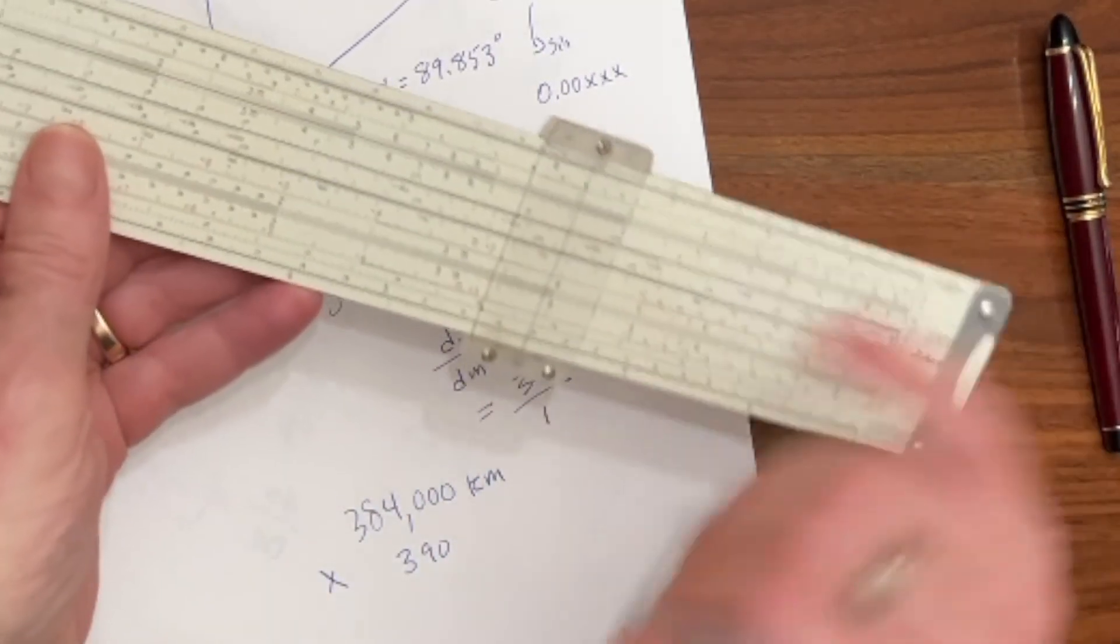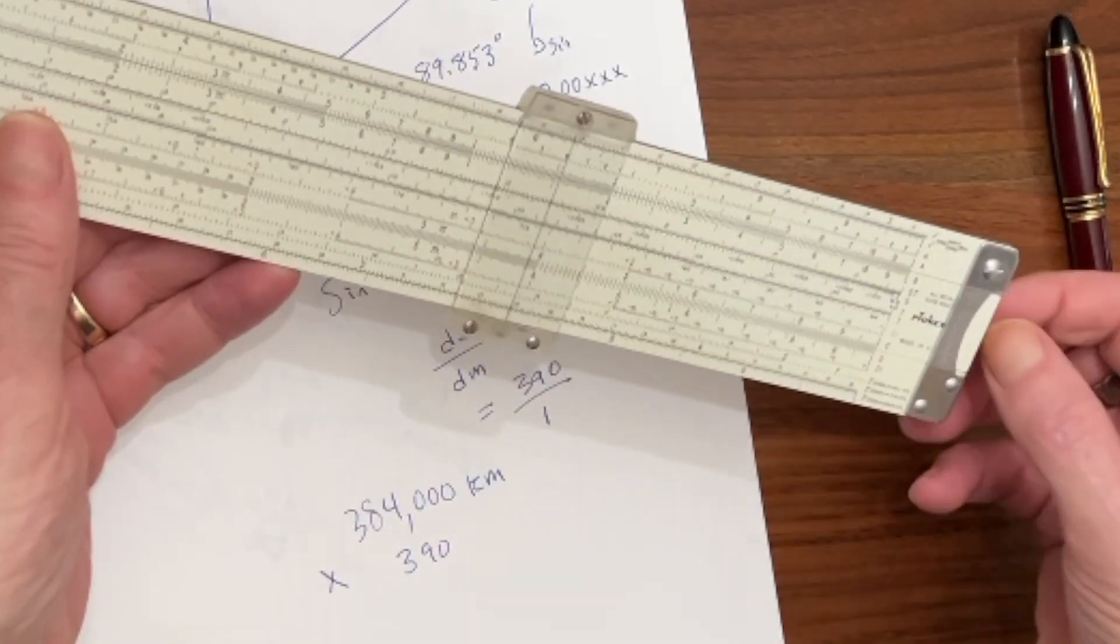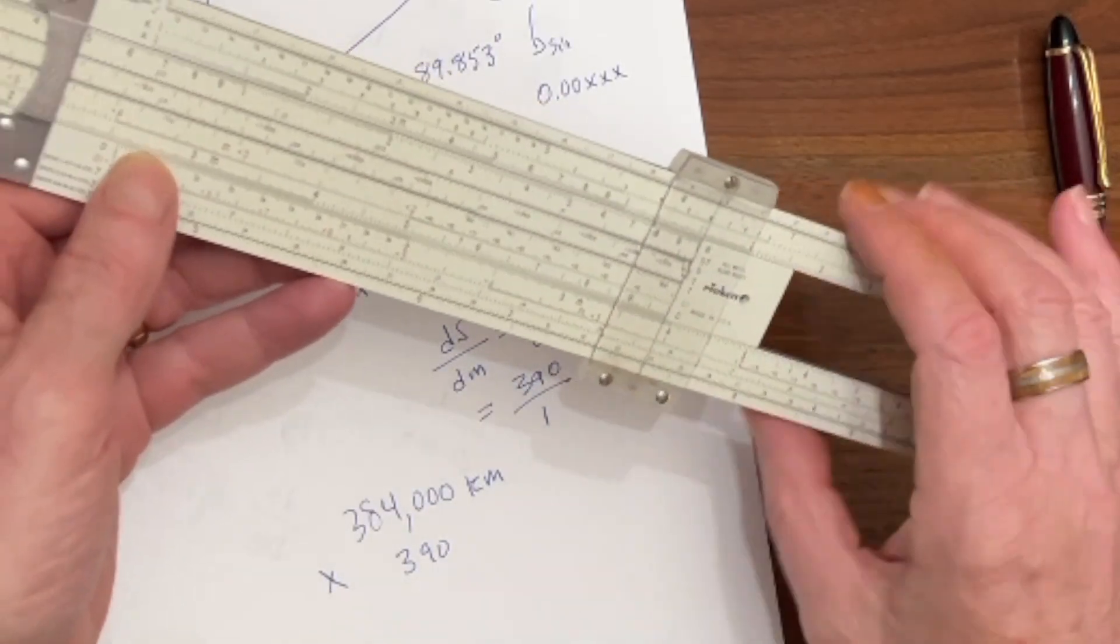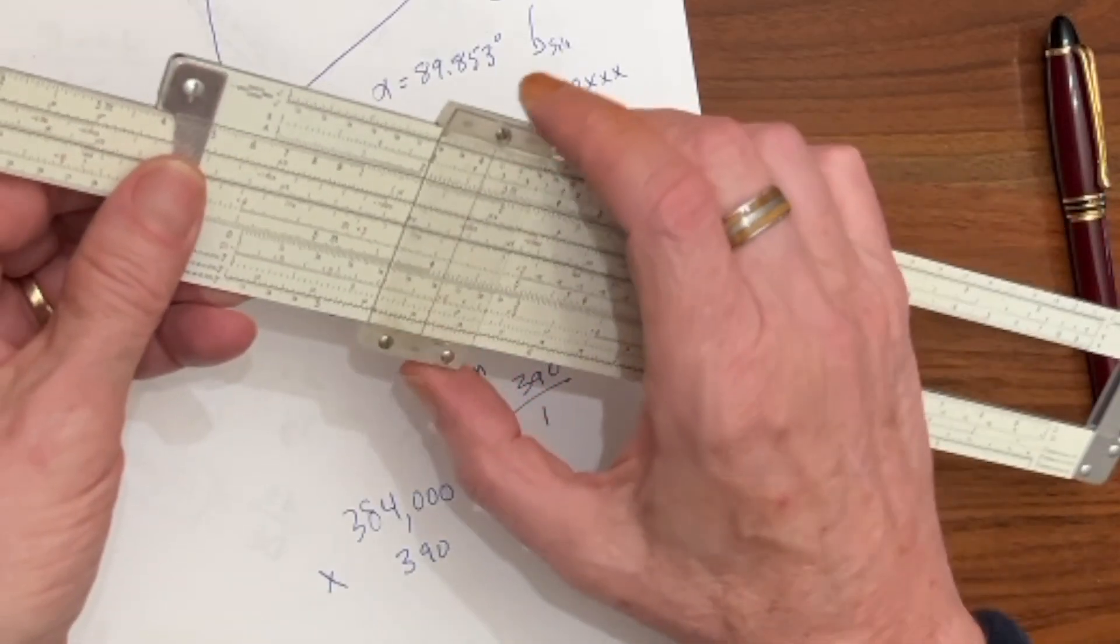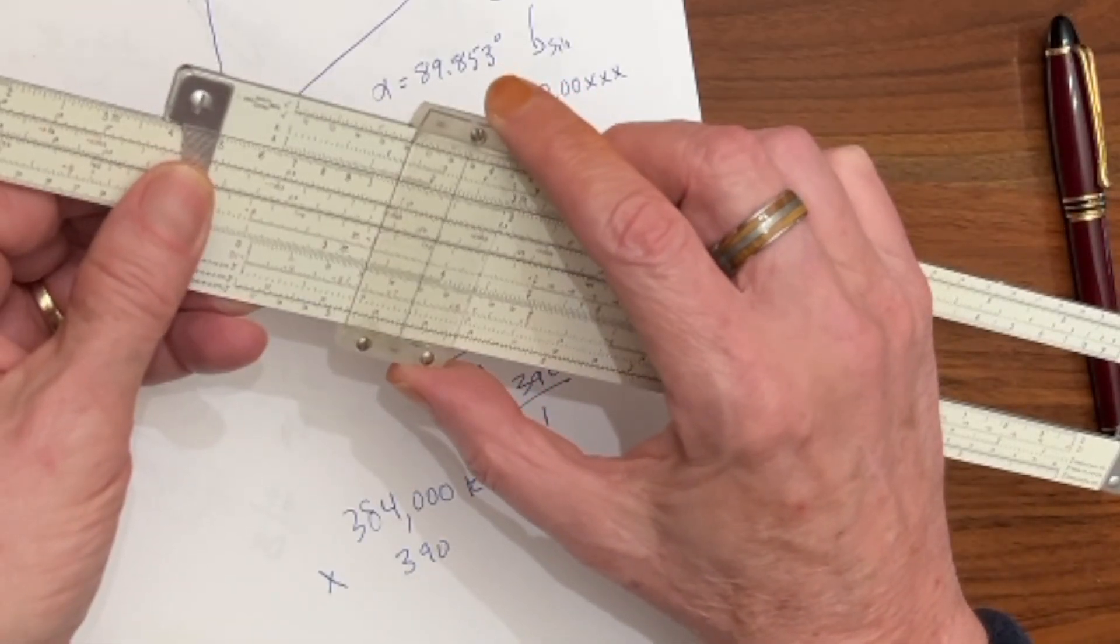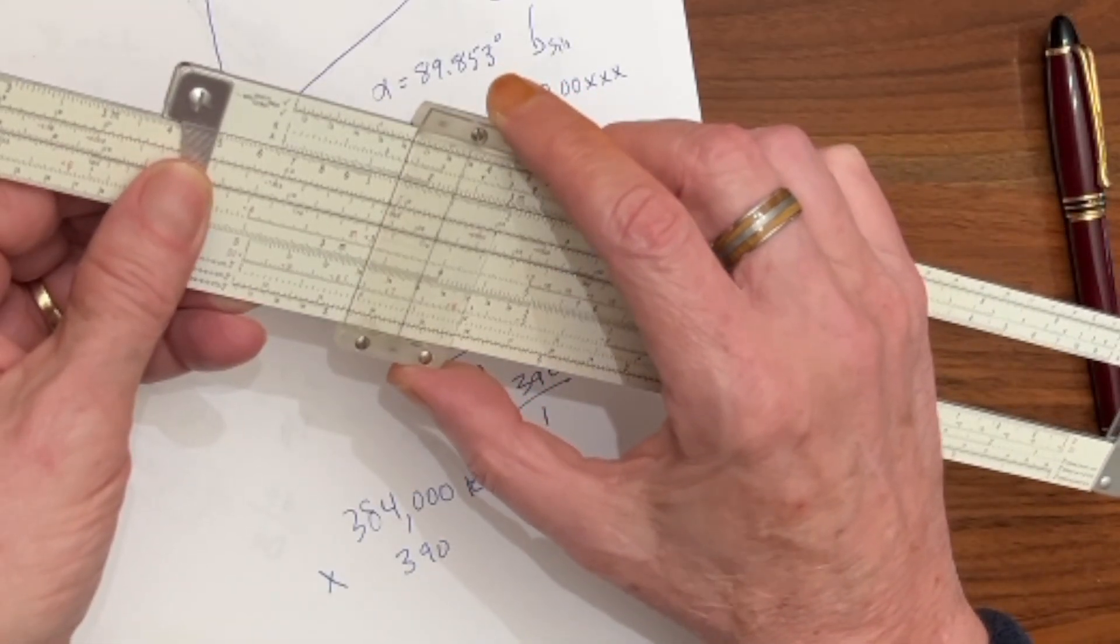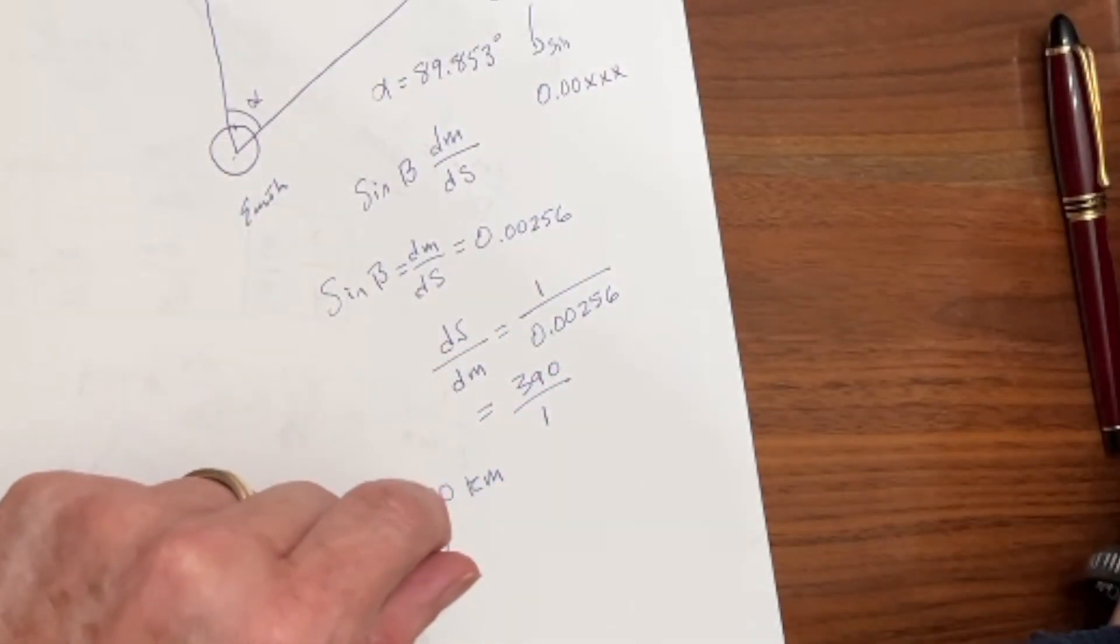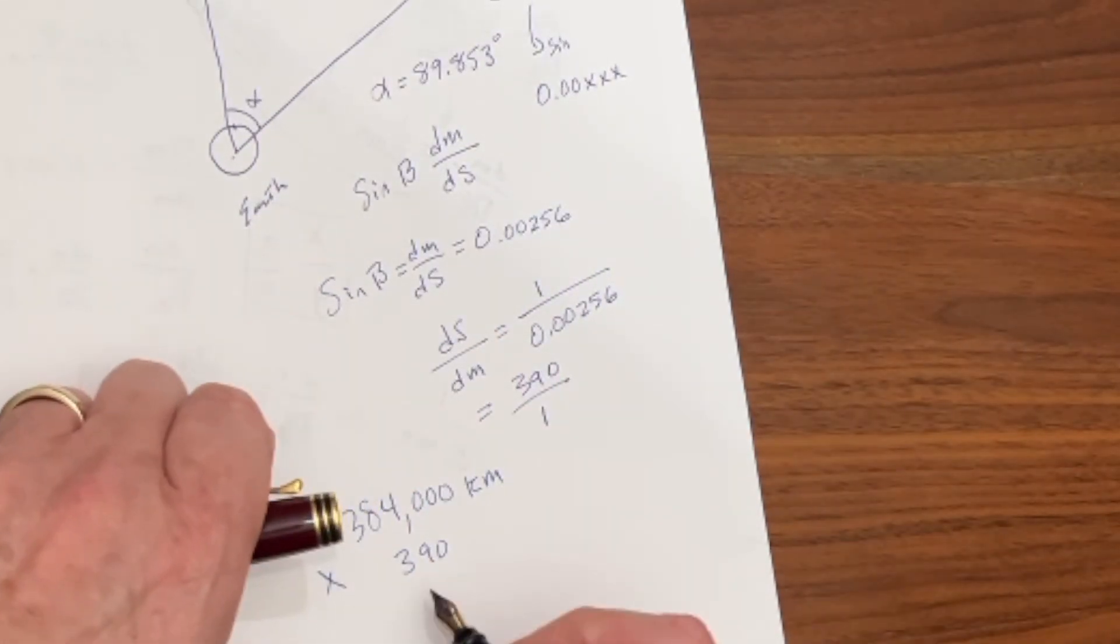Let's go ahead and do that real quick. So we already have 390 queued up here. We're going to line up our index right over 390, and we're going to come out here to 384. And we have a distance to the sun of 150 million kilometers.